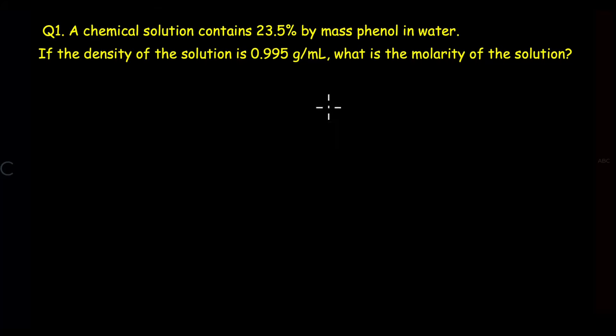We are already familiar with various ways to express concentration of a solution like molarity, molality, mole fraction, mass percentage, volume percentage, and so on. In this video we are going to solve a few questions based on these concentration terms. Let's look at the first question, which states that a chemical solution contains 23.5% by mass phenol in water. If the density of the solution is 0.995 g/mL, what is the molarity of the solution?